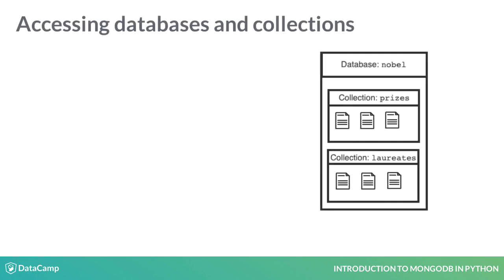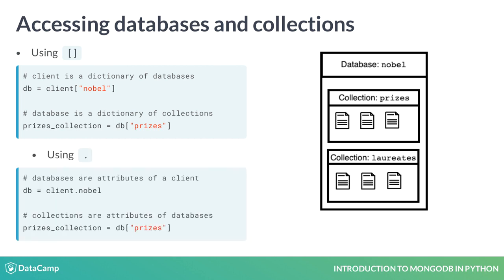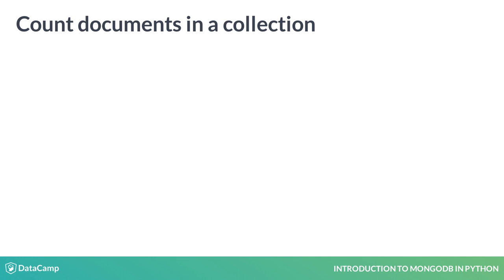Now, let's go over how to count documents in a collection and how to find one to inspect. First, a note on accessing databases and collections from a client object. One way is square bracket notation, as if a client is a dictionary of databases with database names as keys. A database, in turn, is like a dictionary of collections with collection names as keys. Another way to access things is dot notation — databases are attributes of a client, and collections are attributes of a database. To count documents, use the count_documents collection method.